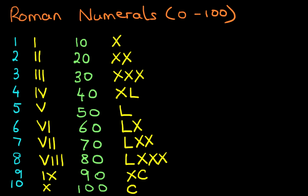Suppose we have 46. How do we write 46 in Roman numerals? Well, the first thing we concentrate on is the digit on the left. In this case it is 4 — that is 40. How do we write 40? Well, it's over here. So we write down XL. That is 40.